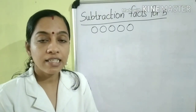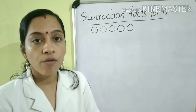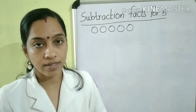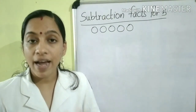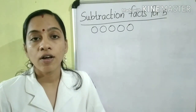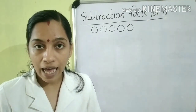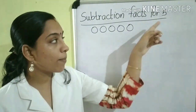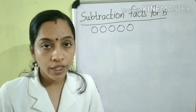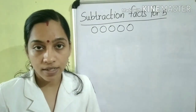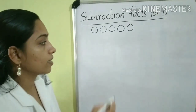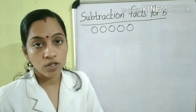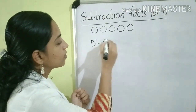First we will learn the subtraction facts for the number 5. Here, I have drawn 5 circles. For finding the subtraction facts, what will you do? We have to subtract some numbers from the given number. Here, the given number is 5. Now, we are going to subtract some numbers from 5. First we are going to subtract 0 from 5, so we can write 5 minus 0.